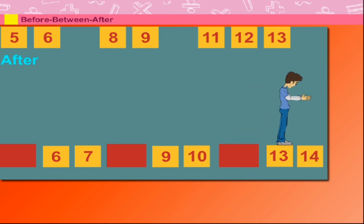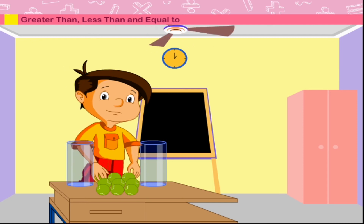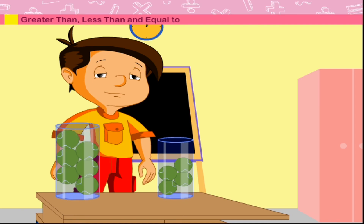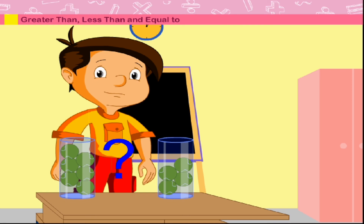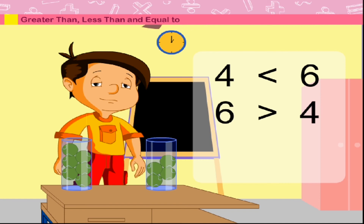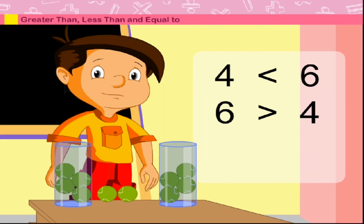And what comes after 13? It is 14. We've understood Sammy. Greater than, less than, and equal to. Here are 2 containers. Let's drop balls into them. The left container has 4 balls. The right container has 6 balls. Which container has more number of balls? As 4 is less than 6, or we can say 6 is greater than 4, so the right container has more number of balls. Now we take off 2 balls from the right container, so now both the containers have equal number of balls.